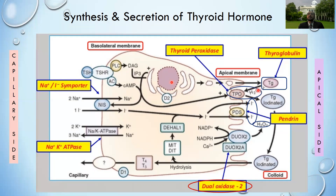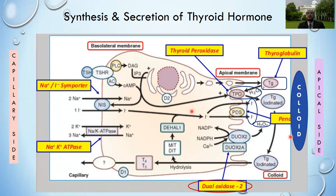Thyroid peroxidase also catalyzes the incorporation of iodine into the tyrosine residue of thyroglobulin. The thyroid hormones produced remain within the lumen as part of the thyroglobulin molecule - the colloid. This colloid represents the reserve of thyroid hormones which can be used for body requirements as needed, for up to two months.